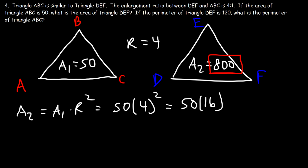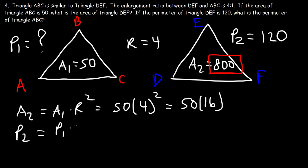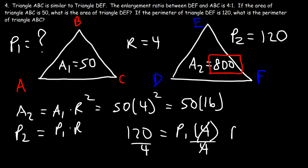For the second part: if the perimeter of triangle DEF (P2) is 120, what is the perimeter P1 of triangle ABC? Using P2 equals P1 times R: 120 equals P1 times 4. Dividing both sides by 4, P1 equals 30. So the perimeter of triangle ABC is 30.